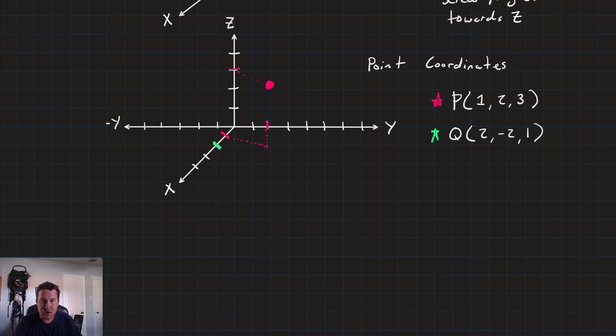So, q is 2 down the x-axis minus 2 down the y-axis. So, something like that. And then 1 on the z-axis. So, that guy is going to be somewhere up there. And that's our q. And that's our p. So, as you can see, drawing point coordinates is pretty simple. There's nothing here that you haven't been doing since grade school.